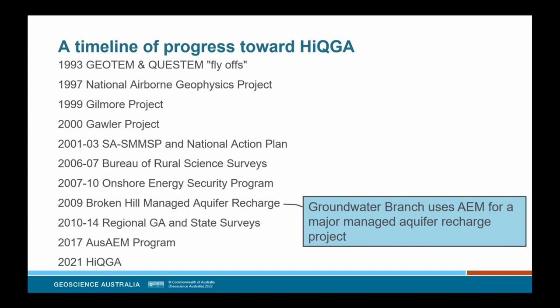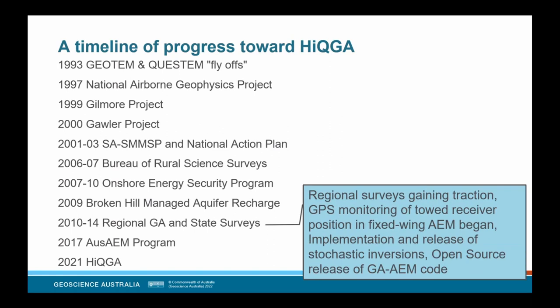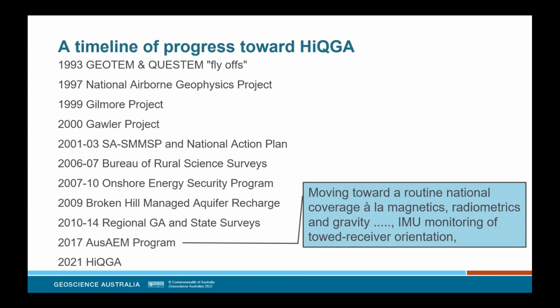The next milestone was when the groundwater team commissioned a large SkyTEM survey for the Broken Hill managed aquifer recharge project in 2009. Further surveys were managed for the state agencies and at this time we began implementing and trialling stochastic inversion of AEM data, the results from which were first released with the Southern Thompson survey in 2014. At around this time we also open-sourced the GA AEM source code on GitHub. The next milestone was the kickoff of the AEM regional mapping program in 2017, completing an impressive national coverage at 20 kilometre line spacing.